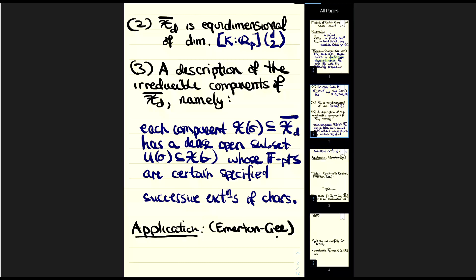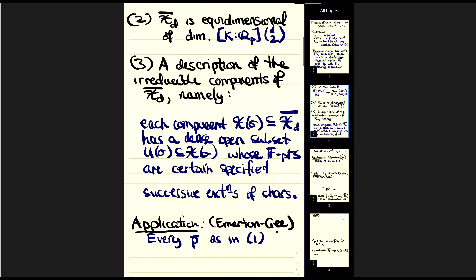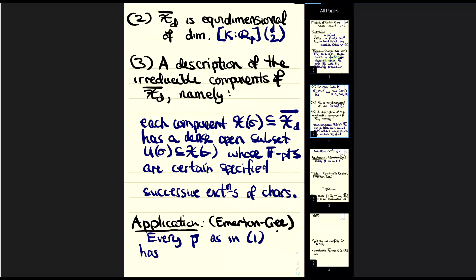To give some example of how remarkable this theorem is, let me mention one application — in fact, an application of the p-adic version. Matt and Toby can prove, using this theorem, that every ρ̄ — every continuous D-dimensional mod-p representation of the Galois group of K — has a characteristic zero lift. You might have guessed this was known before, but as far as we can tell, it was previously known only for D at most three.